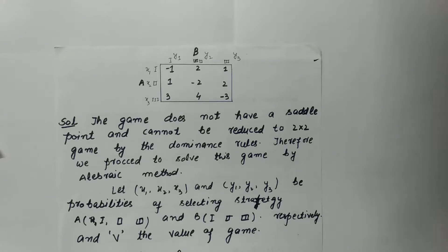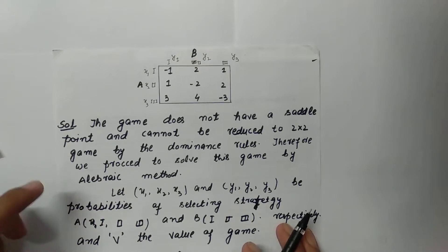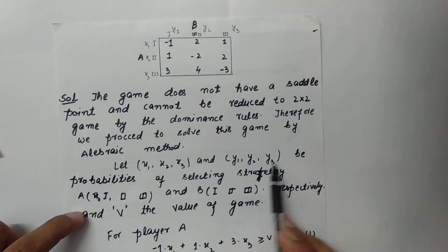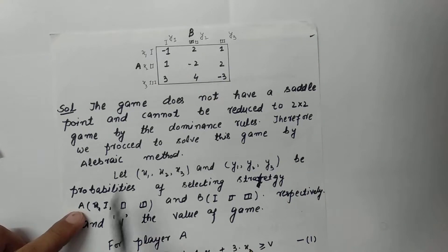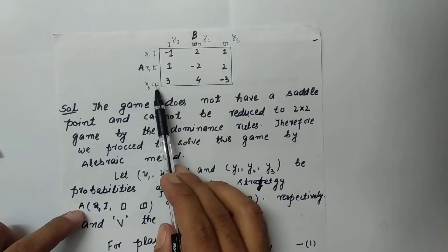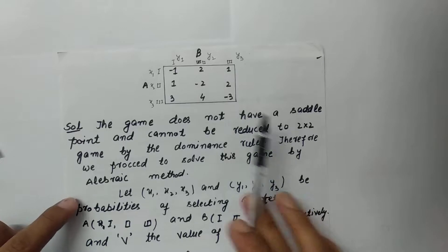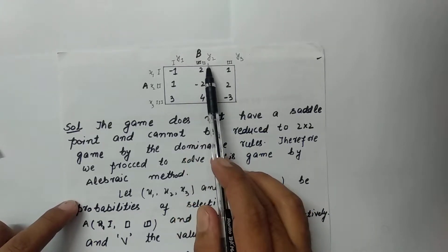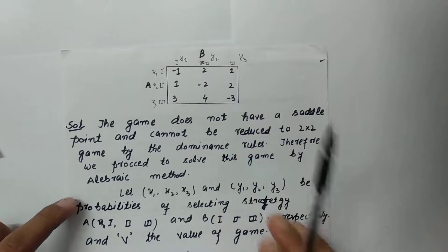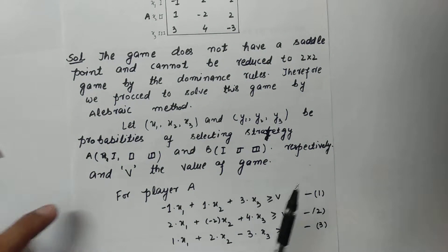So let us start. This game does not have a saddle point and cannot be reduced to a 2x2 game by dominance rule. Therefore we proceed to solve this game using the algebraic method. Let x1, x2, x3 and y1, y2, y3 be the probabilities of selecting strategies. For player A: x1 is the probability for selecting the first strategy, x2 for the second, and x3 for the third. For player B: y1, y2, y3 are the probabilities for selecting B's first, second, and third strategies respectively. Let v be the value of the game.